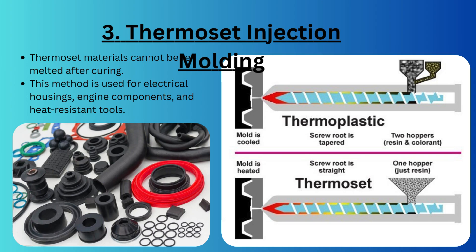Next we have thermoset injection molding. Unlike thermoplastic, thermoset is not recyclable. Once the product is made, we cannot remelt or remanufacture the component. When injected into a heated mold, the thermosetting polymer undergoes a chemical cross-linking reaction, making it rigid and heat resistant. This method is used for electrical housing, engine components, and heat-resistant tools.